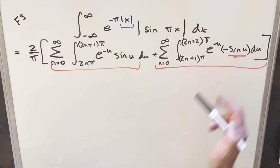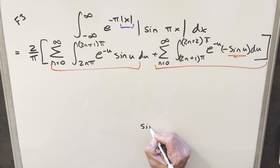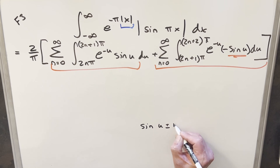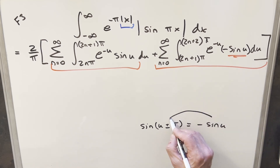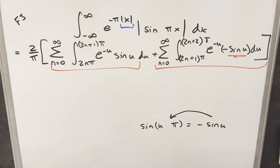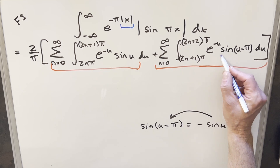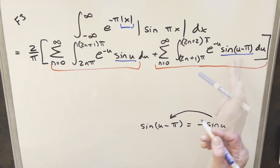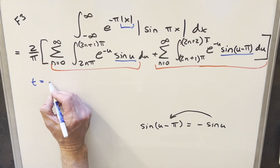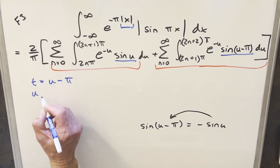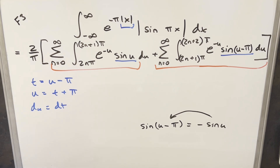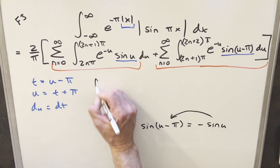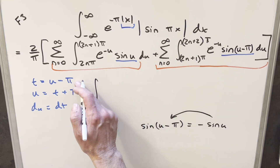I want to focus on the minus sine u terms. Notice that sine(u − π) = −sine(u), so minus sine u can be written as sine(u − π). To match the form of the positive-sine integrals, I'll do a substitution t = u − π, so u = t + π and du = dt. Updating the bounds: the upper bound (2n+2)π minus π gives (2n+1)π, and the lower bound (2n+1)π minus π gives 2nπ — now the bounds match.